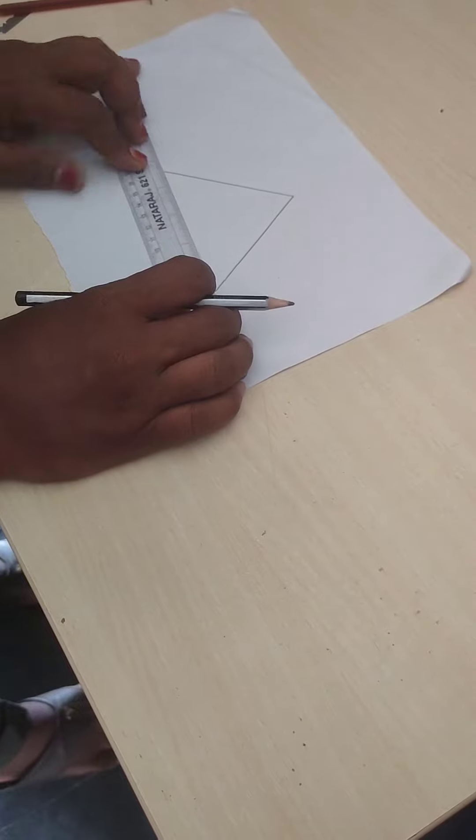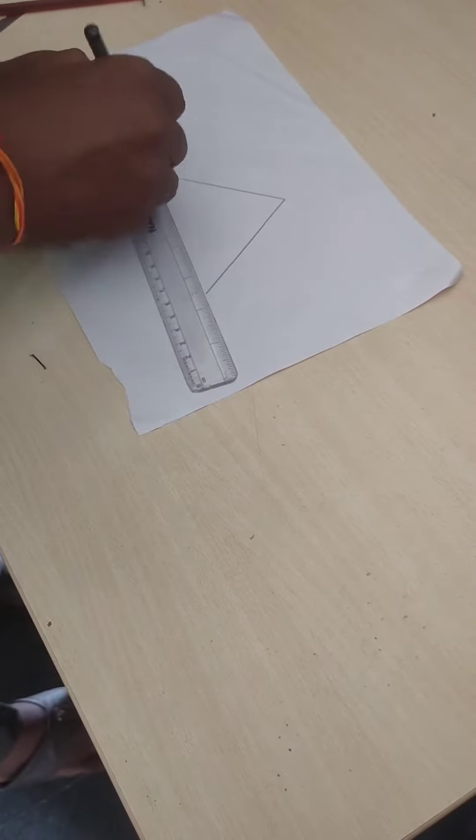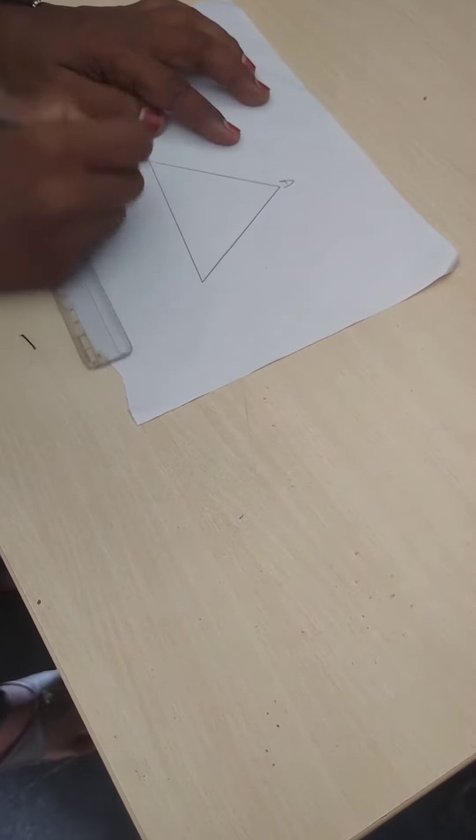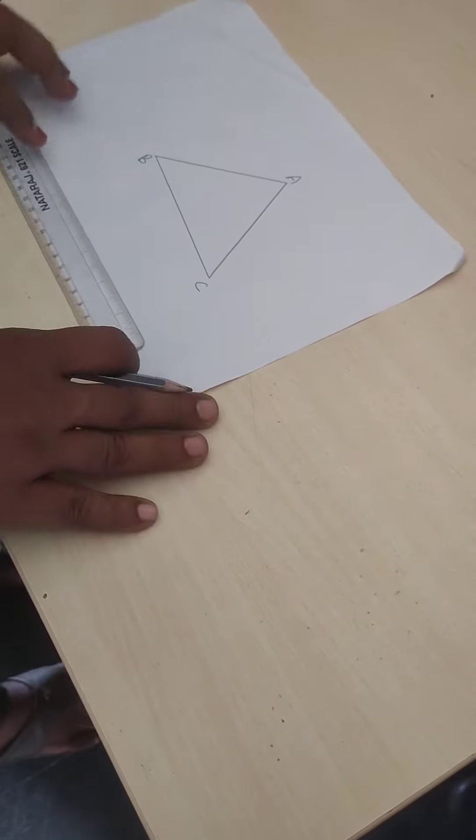This is the triangle. Let's write down the vertices: A, B, C. This is triangle ABC.